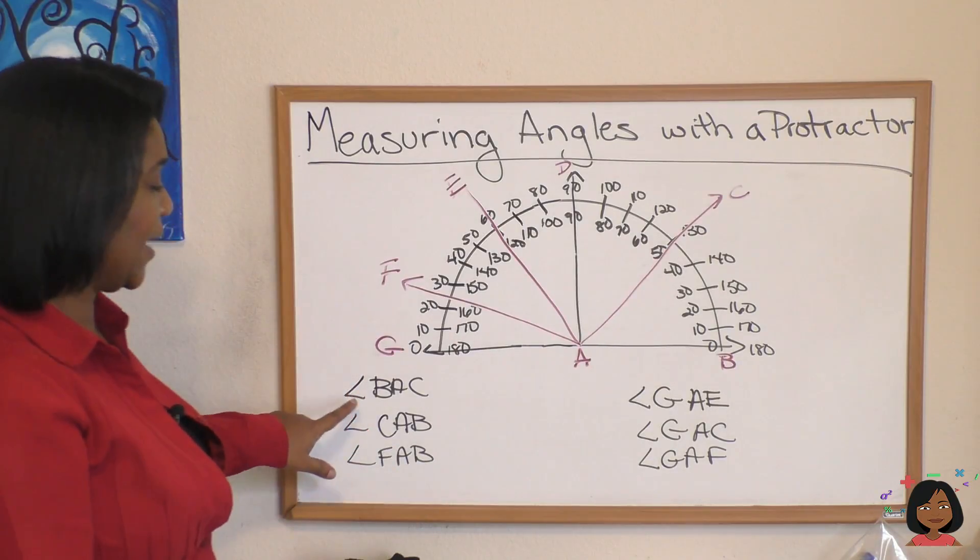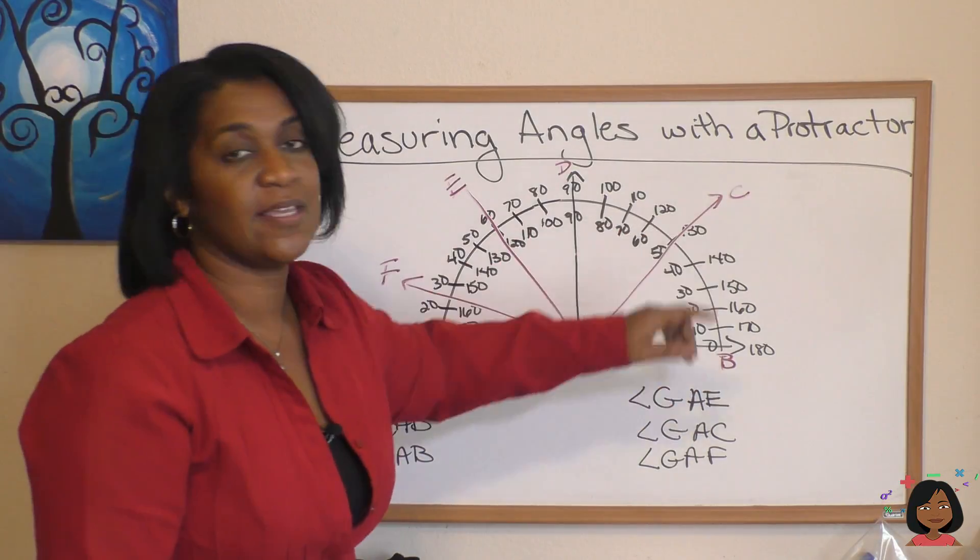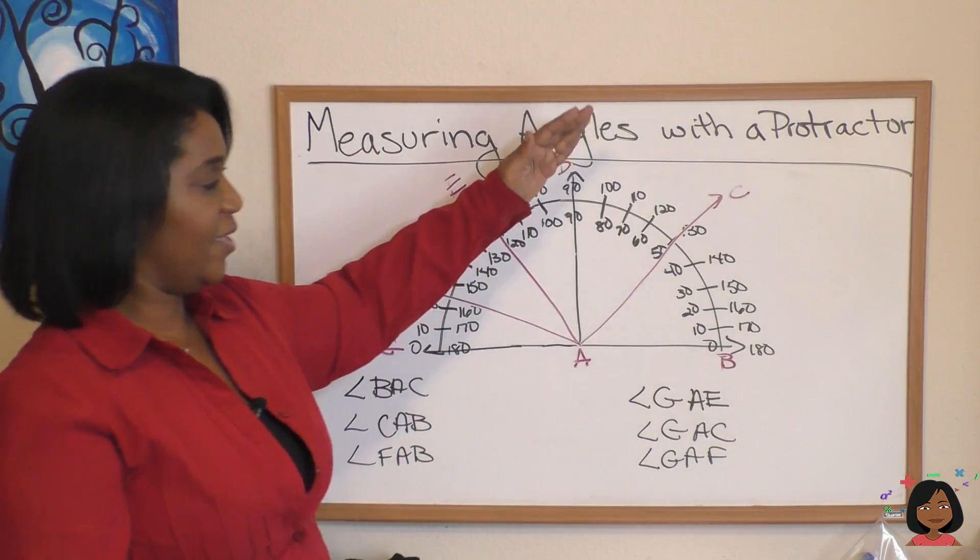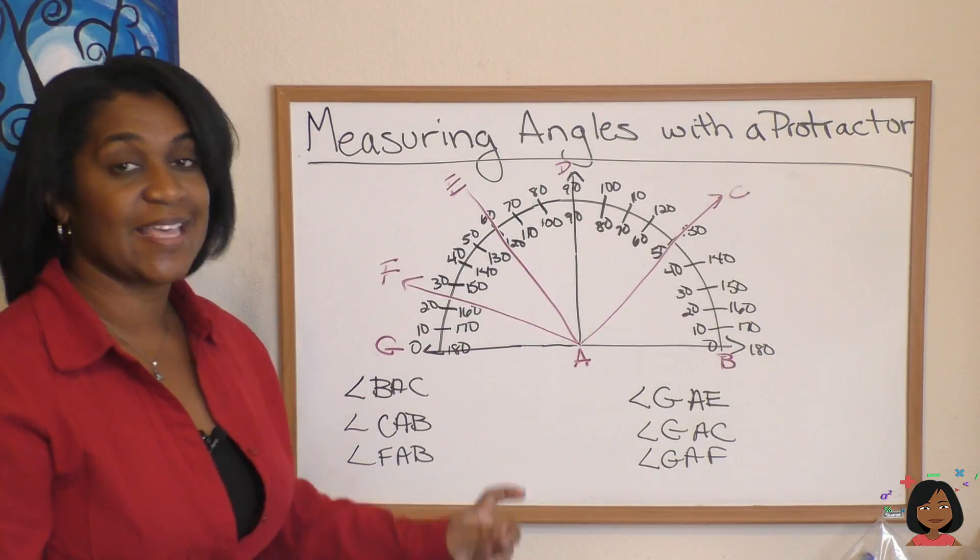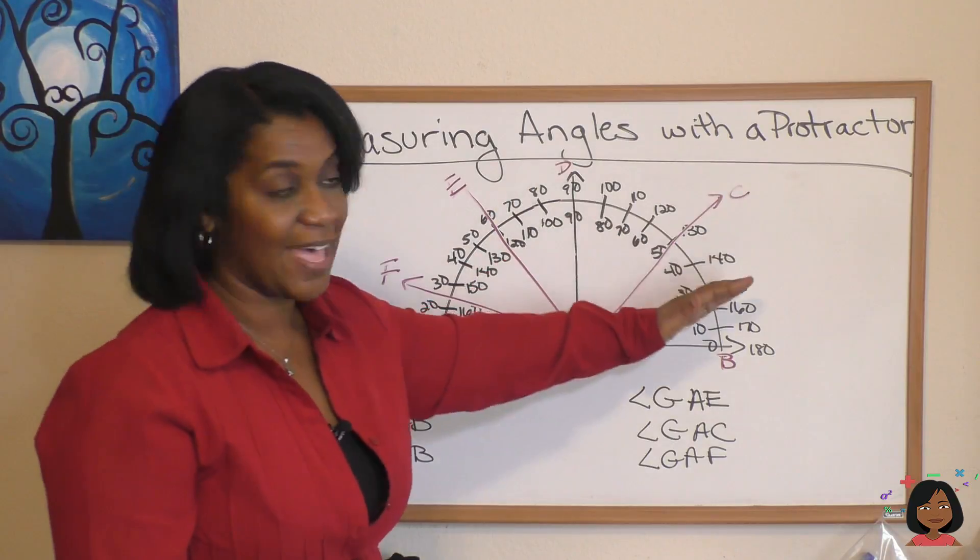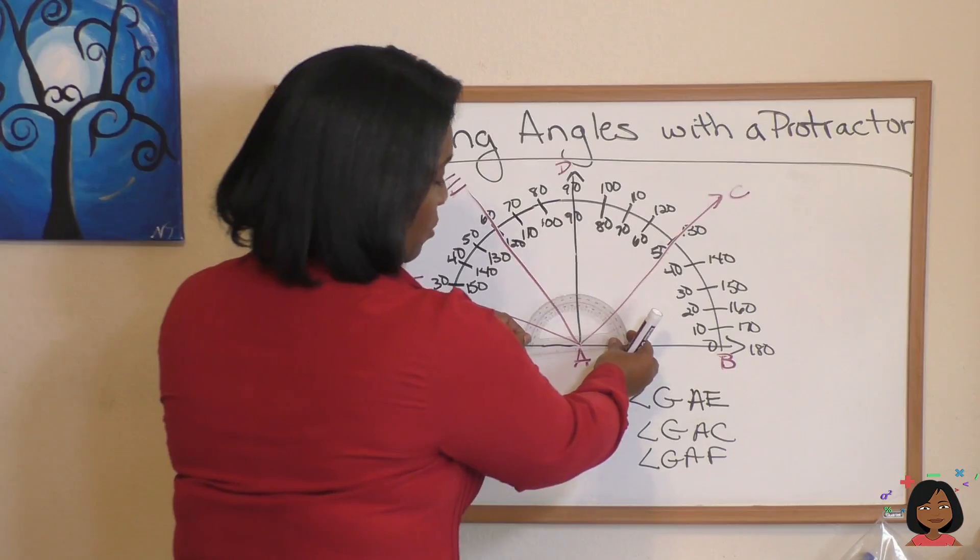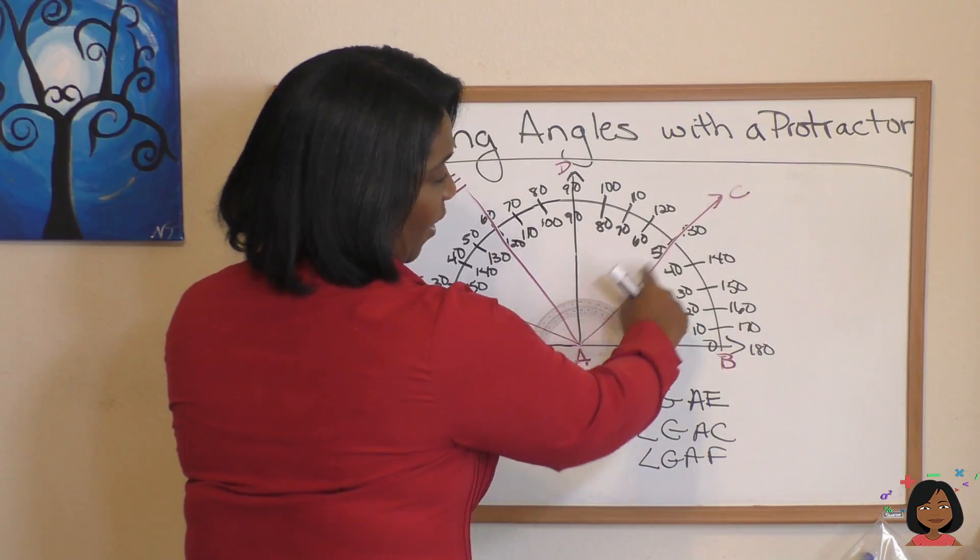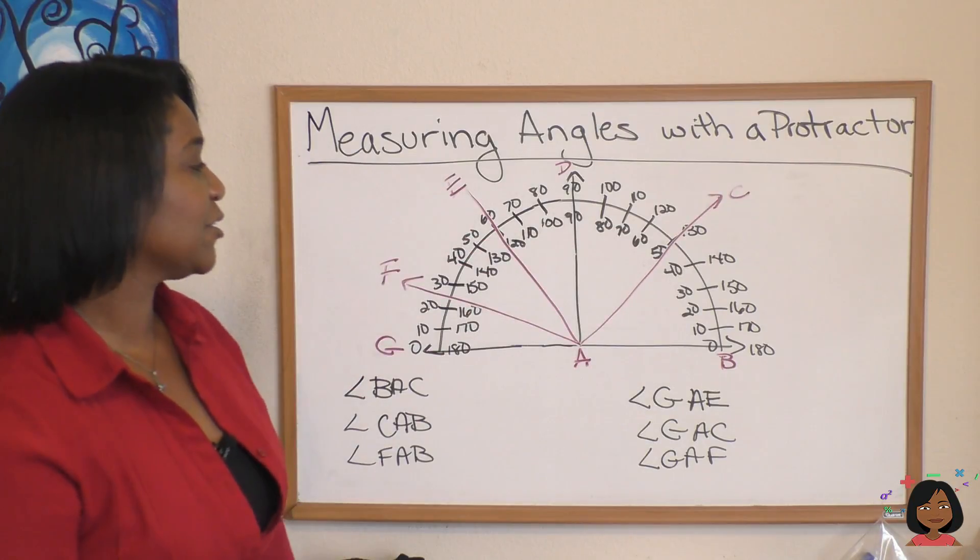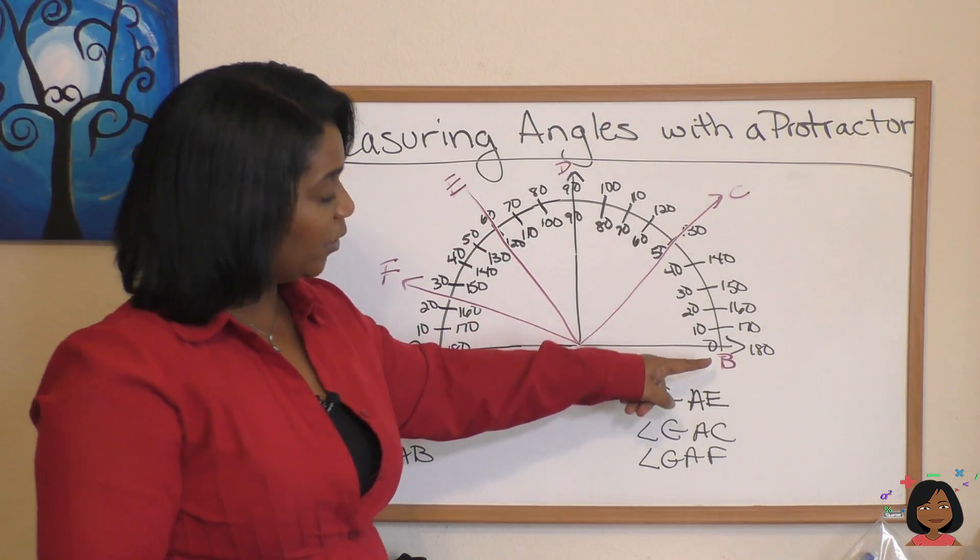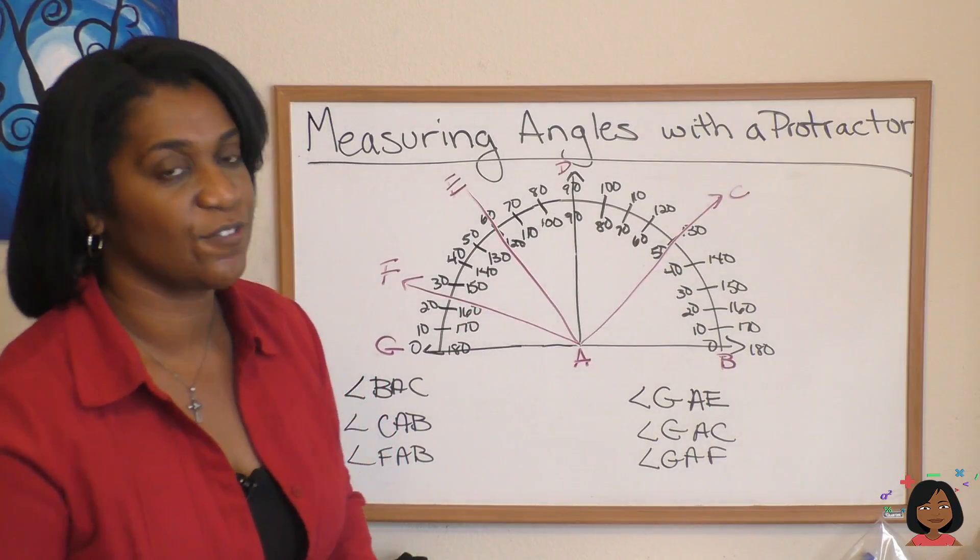Let's start by looking at angle BAC. So this one opens up this way. What kind of angle is it? Acute, obtuse, right, straight? It's an acute angle because it's less than 90 degrees. What we do is take our protractor, put it on A and see where this line AC crosses. I can show you on my protractor. We're going to read the inside. We're going to start from zero and go up to 50. So this one is 50 degrees.